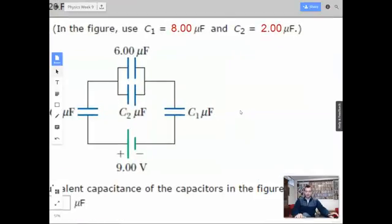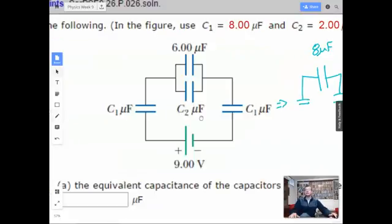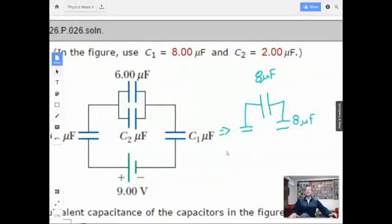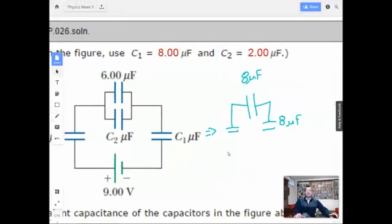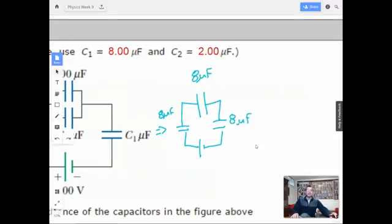So first thing I'm going to do is I'm going to start simplifying this guy. Start with a guy in parallel. So six plus two? Six plus two. Nice. Eight microfarads. So now we need to add these guys together then.